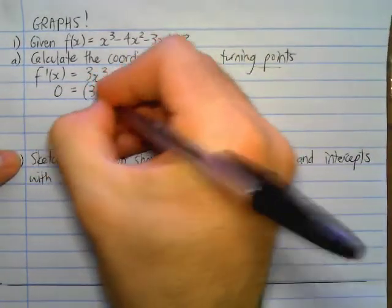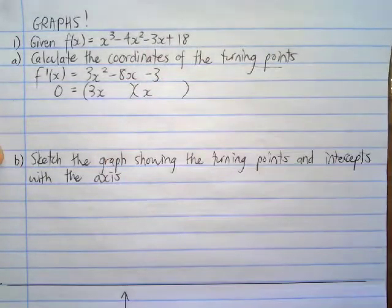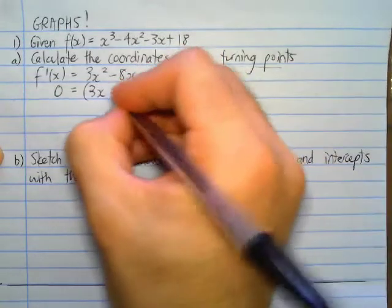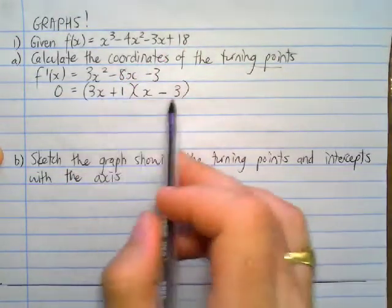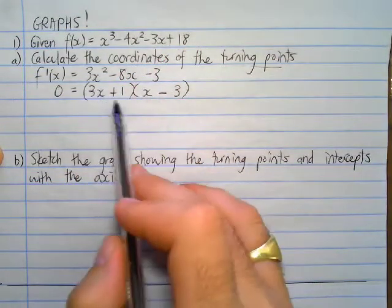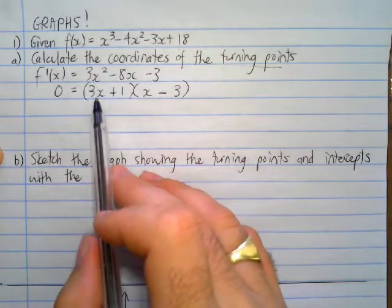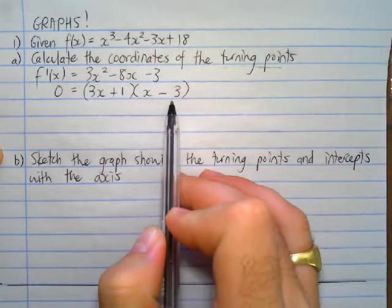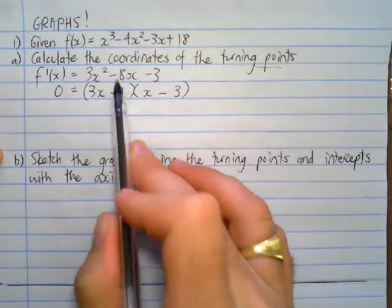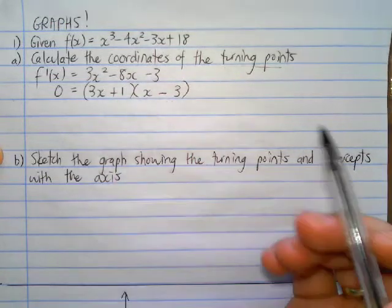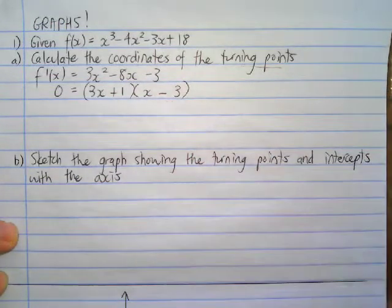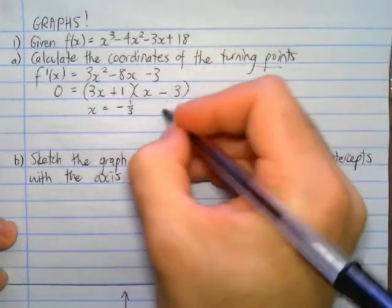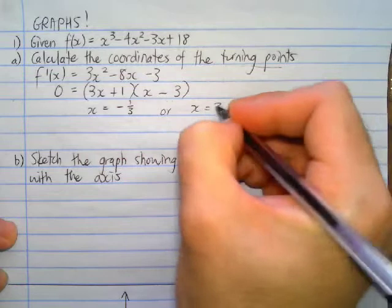Factorizing: we'll have (3x + 1)(x − 3). Let's verify — 3x times x is 3x squared, 3x times negative 3 is negative 9x, plus x is negative 8x, and 1 times negative 3 is negative 3. So that factorizes correctly, meaning x equals negative one-third or x equals 3.